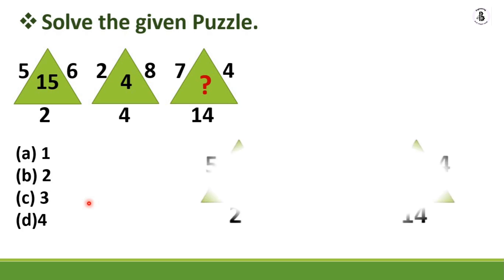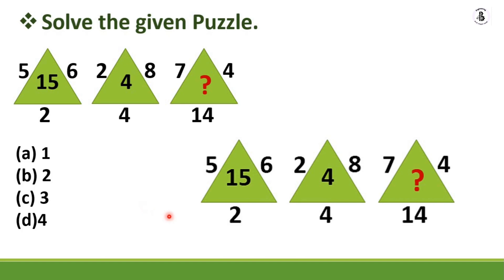To solve this, you need to find the relation among all four numbers in each triangle. After trying addition, multiplication, subtraction, and squares, for the first triangle: 5 multiplied by 6 equals 30, and 30 divided by 2 (the base) equals 15. So the inner value is obtained by multiplying the two side numbers and dividing by the base.